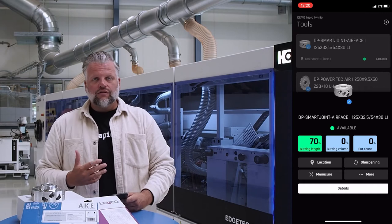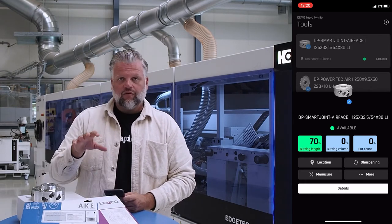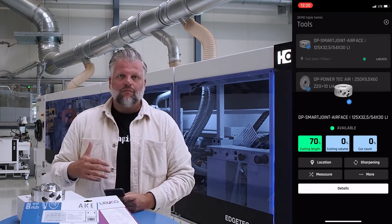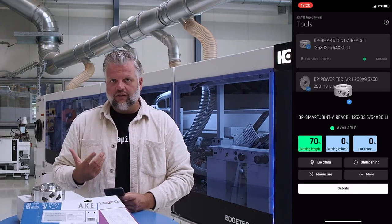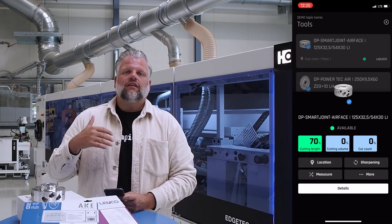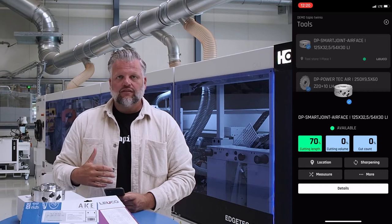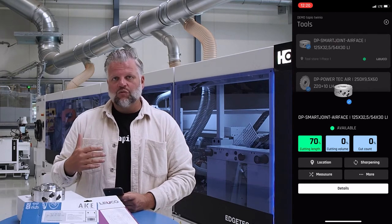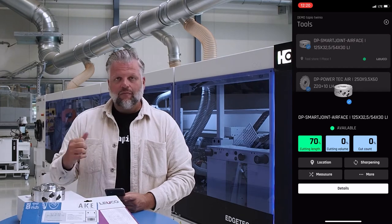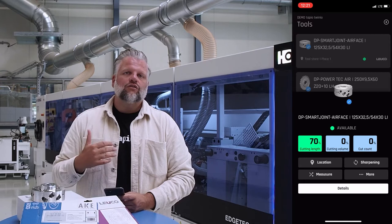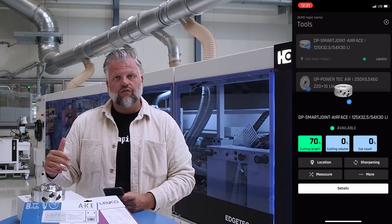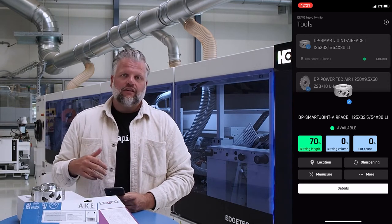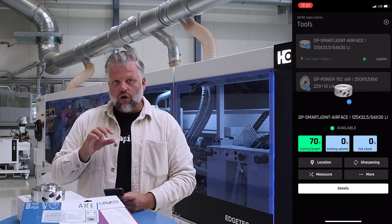For example, you can look at the process data — for saw blades this includes cutting length, cut volume, and cut counts. As a customer, you can set a limit value from your personal experience, then either enter the latest process data manually after production, or if your machine is tapio-ready and connected, it sends process data automatically to Twinio. This helps you know when a tool needs to go to the sharpening service — based on data, not guesswork.